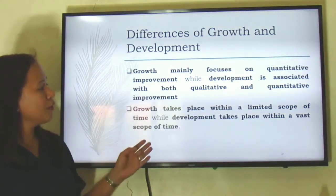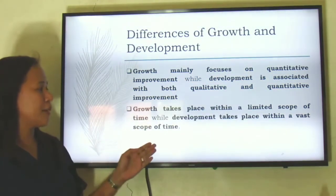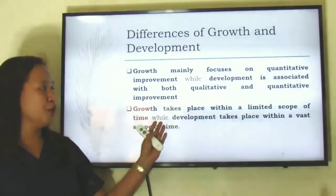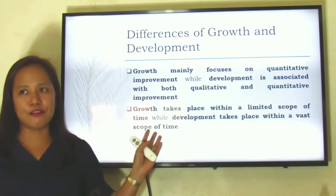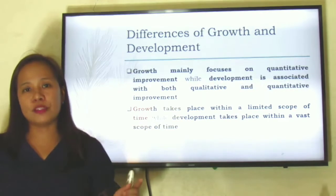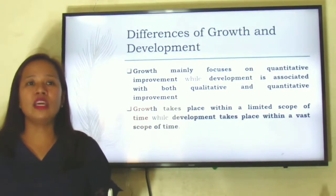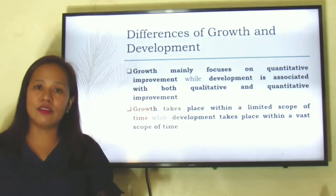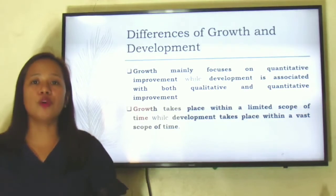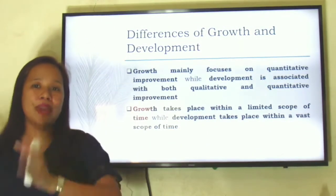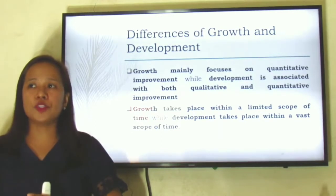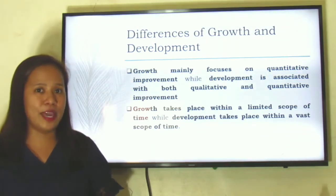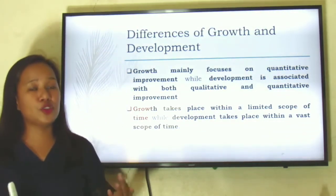Growth takes place within a limited scope of time while development takes place within a vast scope of time. In growth, there is a limited scope. For instance, a girl stops getting taller when she reaches 14 to 15 years old, and it is expected that she becomes fully developed and becomes a woman at the age of 25. For boys, they stop growing at the age of 16 and become fully developed at the age of 18. So there is basically a limited scope of time.